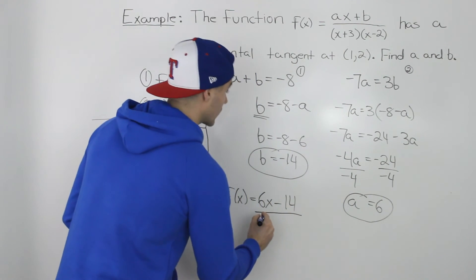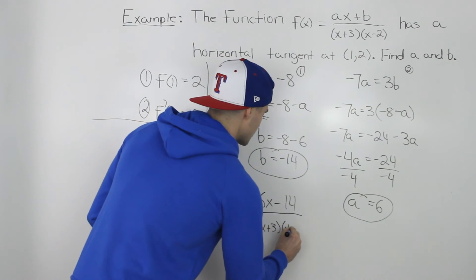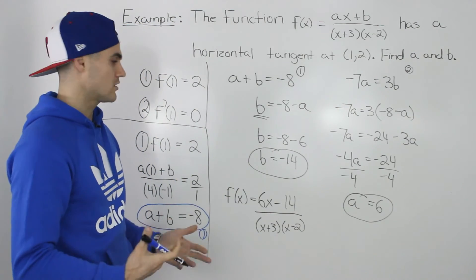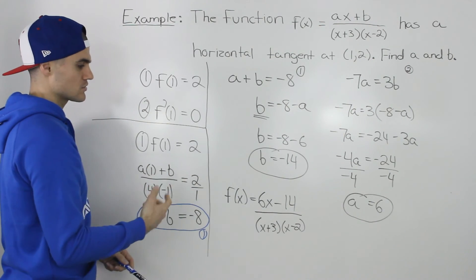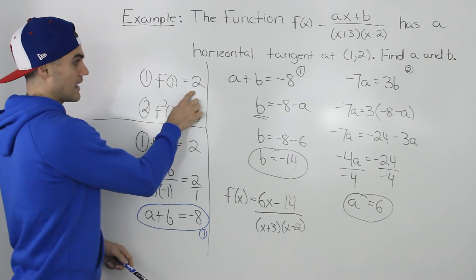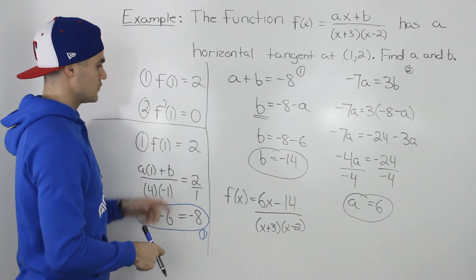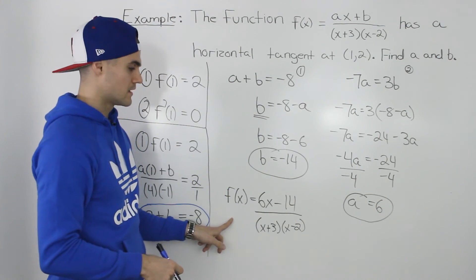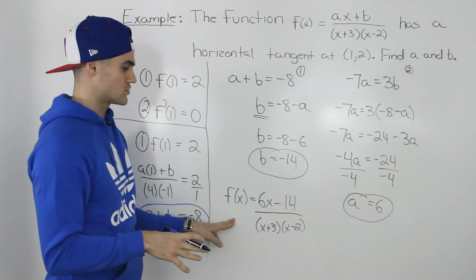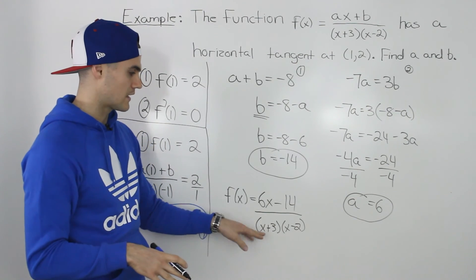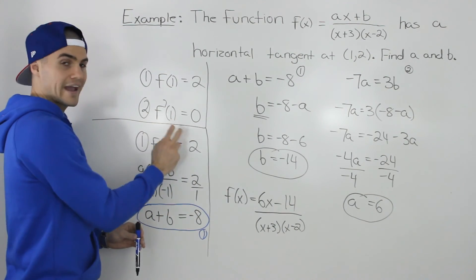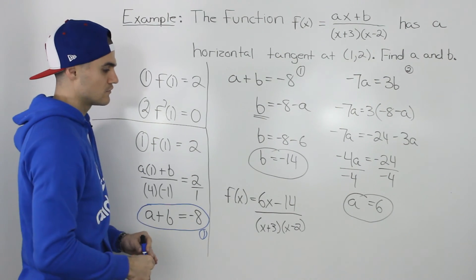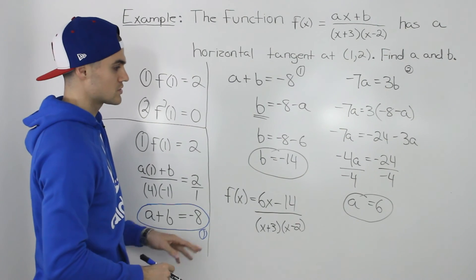You can always check your answer by going back to the original equations. Plugging x = 1 into the final function gives a y value of two, so the first equation holds. For the second check, expand the denominator and find the derivative using the quotient rule — when you plug x = 1 into that derivative, you should get zero, confirming both equations hold and our constants are correct.